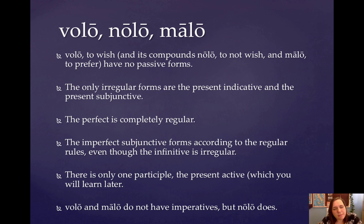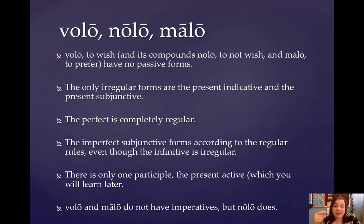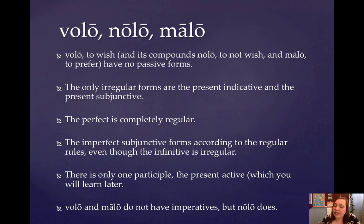There's only one participle, and that's the present active participle. Since you haven't learned present active participles yet, don't really worry about it. Volo and malo do not have imperatives, but nolo does. And as a matter of fact, you know the imperative for nolo because you've been using it for a while now to do negative commands: noli or nolite plus the infinitive.